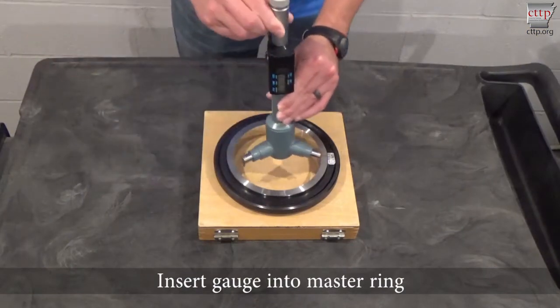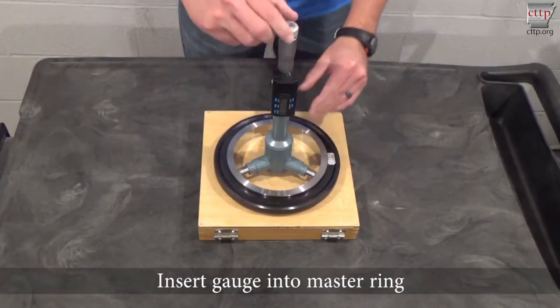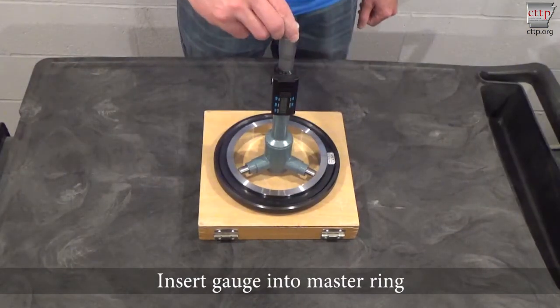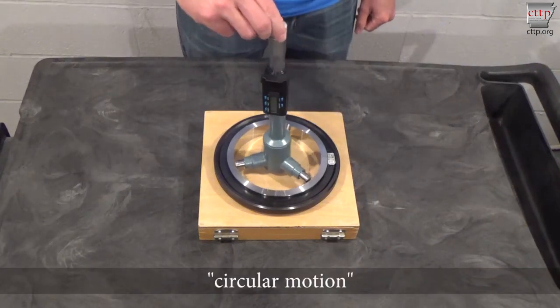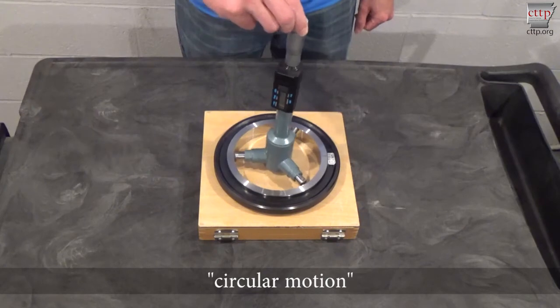Place the master ring on a hard, flat surface and insert the bore gauge into the master ring. To properly tighten a bore gauge, a circular motion is used to help center it in the master ring.